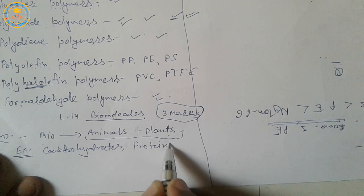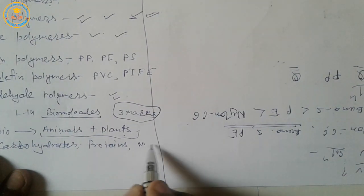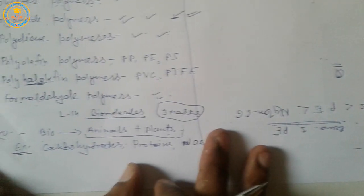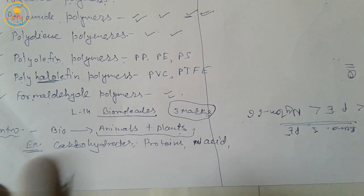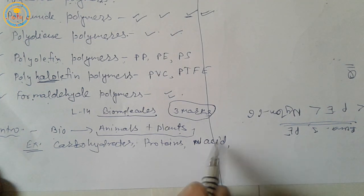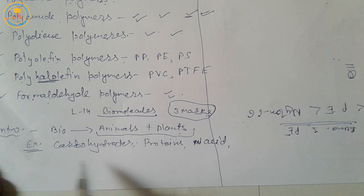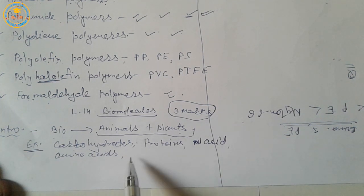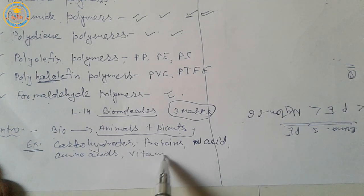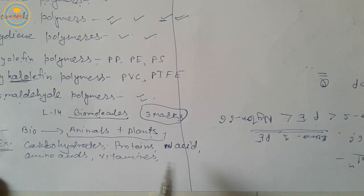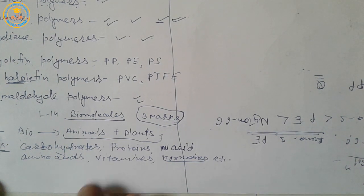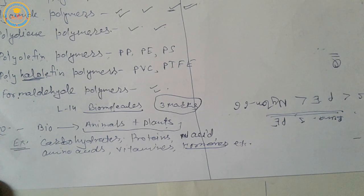Nucleic acids — of the DNA and RNA type — amino acids, vitamins, hormones, etc. are also examples of biomolecules.